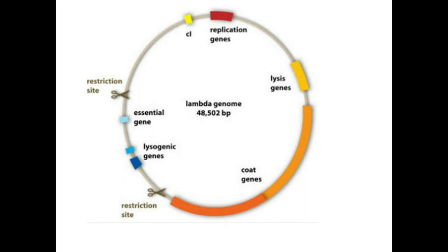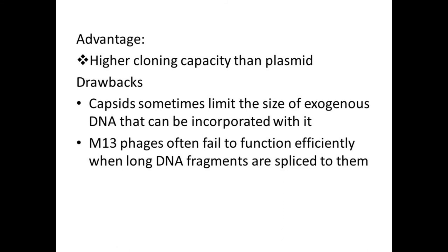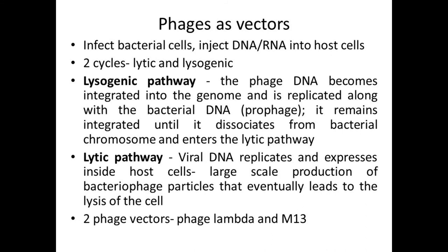The advantage of using a phage as a vector is that it has a higher cloning capacity than a plasmid. However, there are drawbacks: the capsid — the bacteriophage's outer covering — can limit the size of foreign DNA that can be incorporated. If the foreign DNA is too long, the phages fail to function efficiently. Commonly used phage vectors are phage lambda and M13 phage vectors.